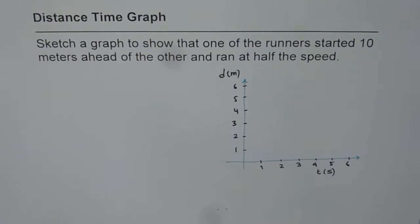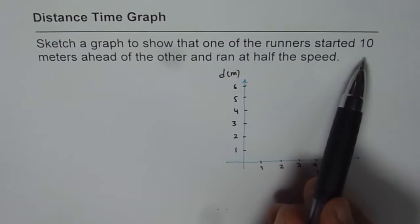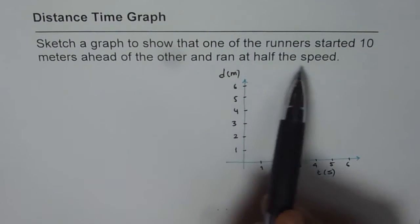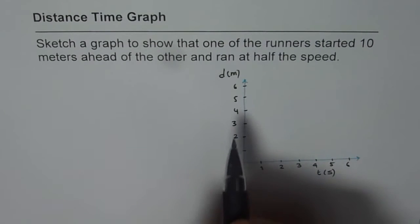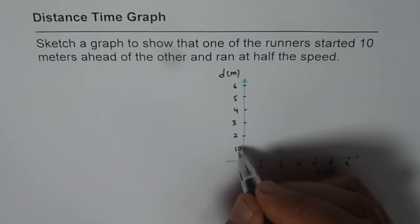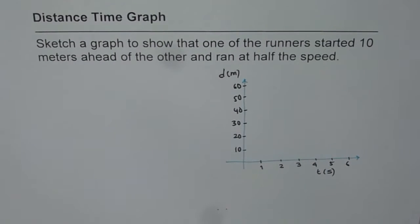Now it says sketch a graph to show that one runner started 10 meters ahead of the other and ran at half the speed. Since it is 10 meters, let me make them in tens: 10, 20, 30, 40, 50, 60. I changed the scale so that we can have 10 meters.